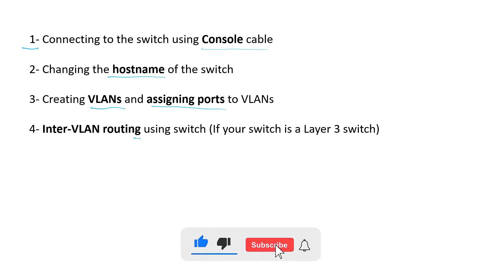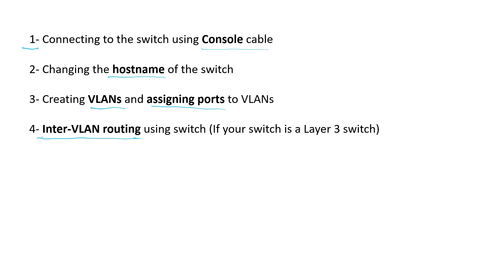After that we want to do inter-VLAN routing, so the computers that are in different VLANs can have access to each other. You can do this step if your switch is a layer 3 switch. If your switch is a layer 2 switch, you cannot do it using your switch — you have to do the inter-VLAN routing using a router. But if your switch is a layer 3 switch, like my switch, you can do inter-VLAN routing on your switch.